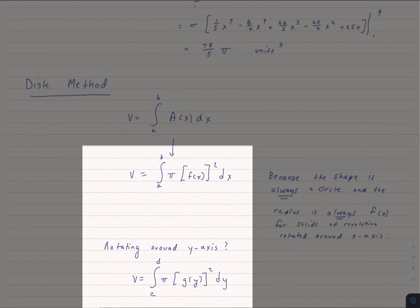Again, there's no reason why we call it c and d instead of a and b, except to keep it straight when we're looking at these formulas. C to d pi of g y squared dy.